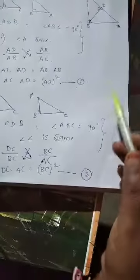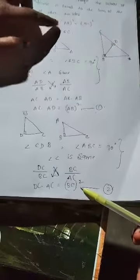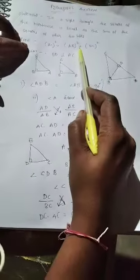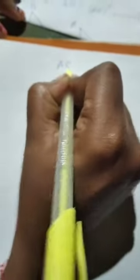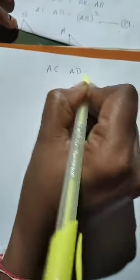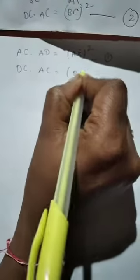From Equation 1 and Equation 2 we have AB² and BC². Now we have to add the two equations. Equation 1 is: AC × AD = AB². Equation 2 is: DC × AC = BC². We have to add these two equations.